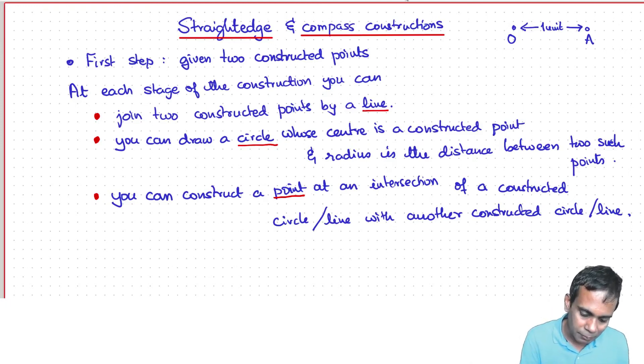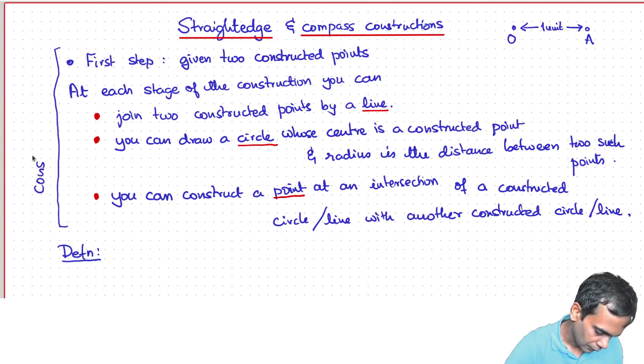And now the definition of a constructible number is the following. So this whole definition is the definition of a construction. It's a series of such steps.